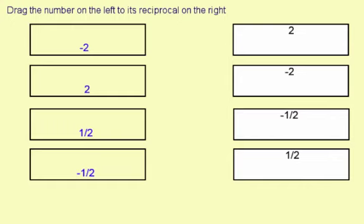Drag the number on the left to its reciprocal on the right. To find a reciprocal, if you have a fraction, you simply flip the fraction over. And if you have a whole number, you use the whole number as a denominator and write a new fraction.